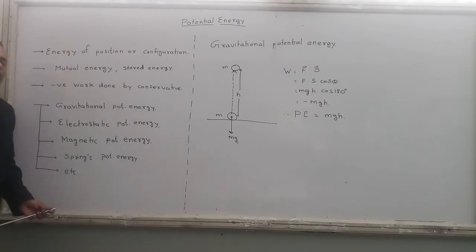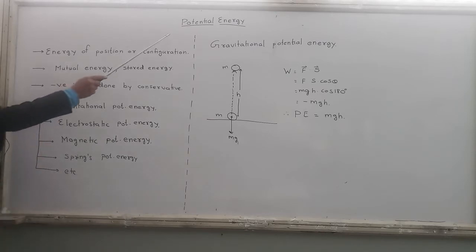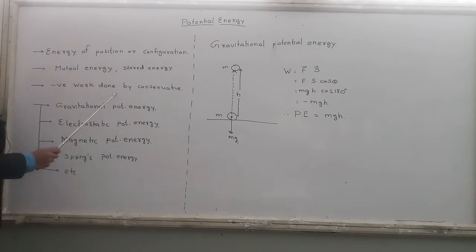But these are very rough and vague definitions of potential energy. The exact definition of potential energy comes by this. Potential energy of a body is equal to the negative work done by conservative force. Potential energy of a body is equal to the negative work done by conservative force. Slowly you will understand what exactly we mean by conservative force.